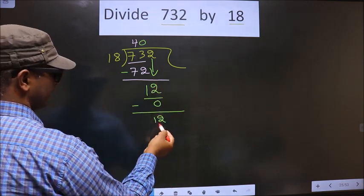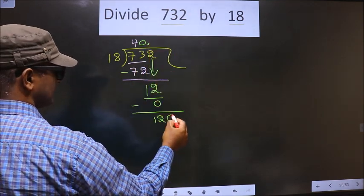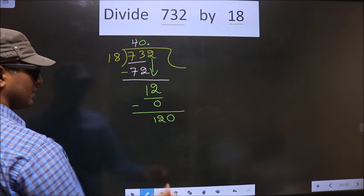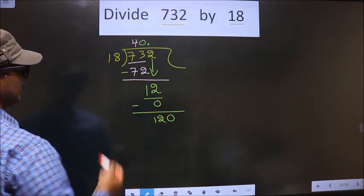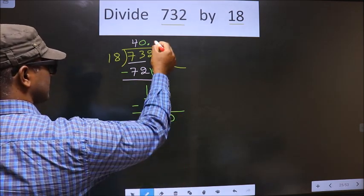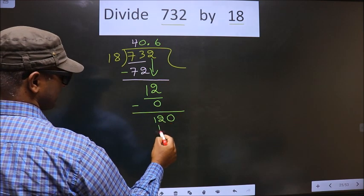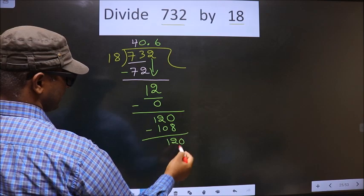And here, 12 is smaller than 18. So we take a decimal and take 0 here. Now we have 120. A number close to 120 in the 18 table: 18 times 5 is 90, 18 times 6 is 108. So you subtract, you get 12, you take 0.